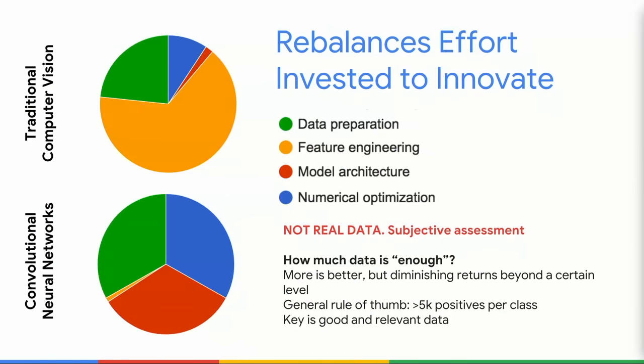There are just two takeaways I want you to get from this. One is that deep learning trains algorithms that are very accurate when given enough data. And two, that deep learning can do this without feature engineering — meaning without explicitly writing rules. In traditional computer vision, we spend a lot of time writing rules that a machine should follow to make a prediction. In convolutional neural networks, we spend very little time on feature engineering. Most of the time we spend in data preparation, numerical optimization, and model architecture.